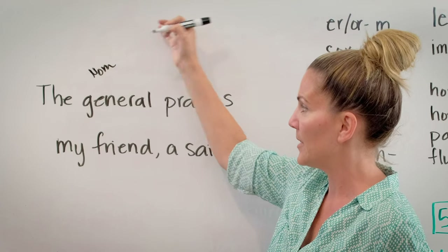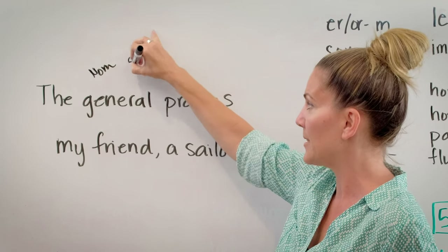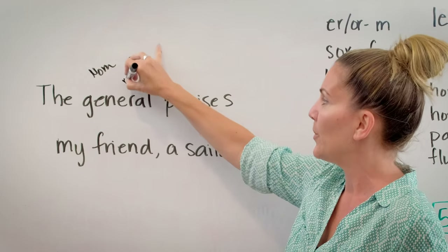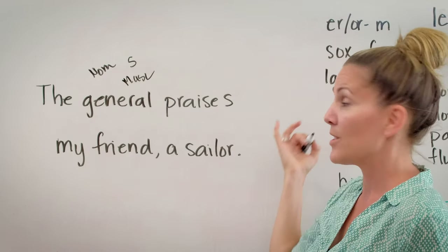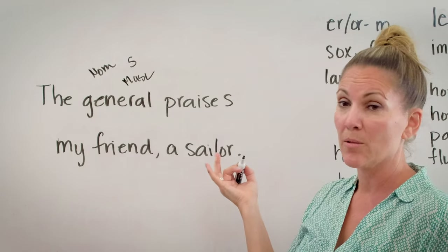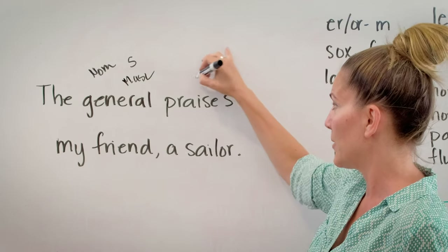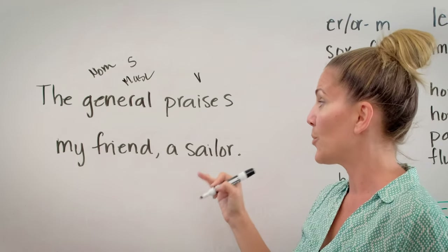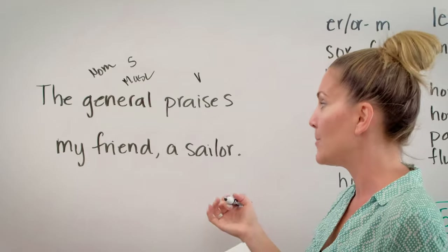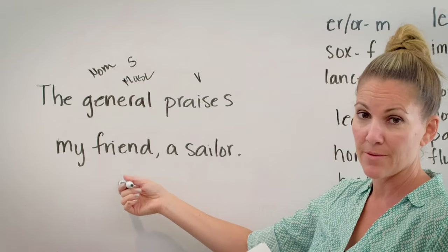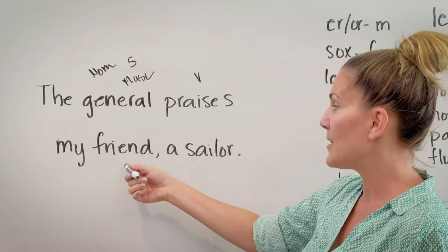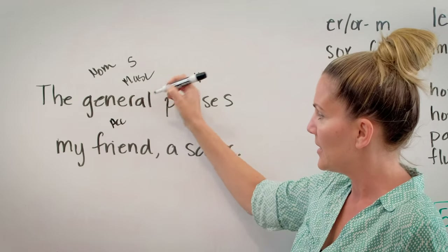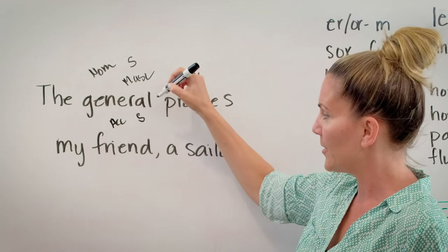However, consider a sentence like 'the general praises my friend, a sailor.' Let's go through it step by step. Who or what is the sentence about? It's about the general — nominative, singular, masculine. What's the general doing? He's praising — there's my verb. The general praises who or what? My friend. So 'friend' is the direct object — accusative singular.